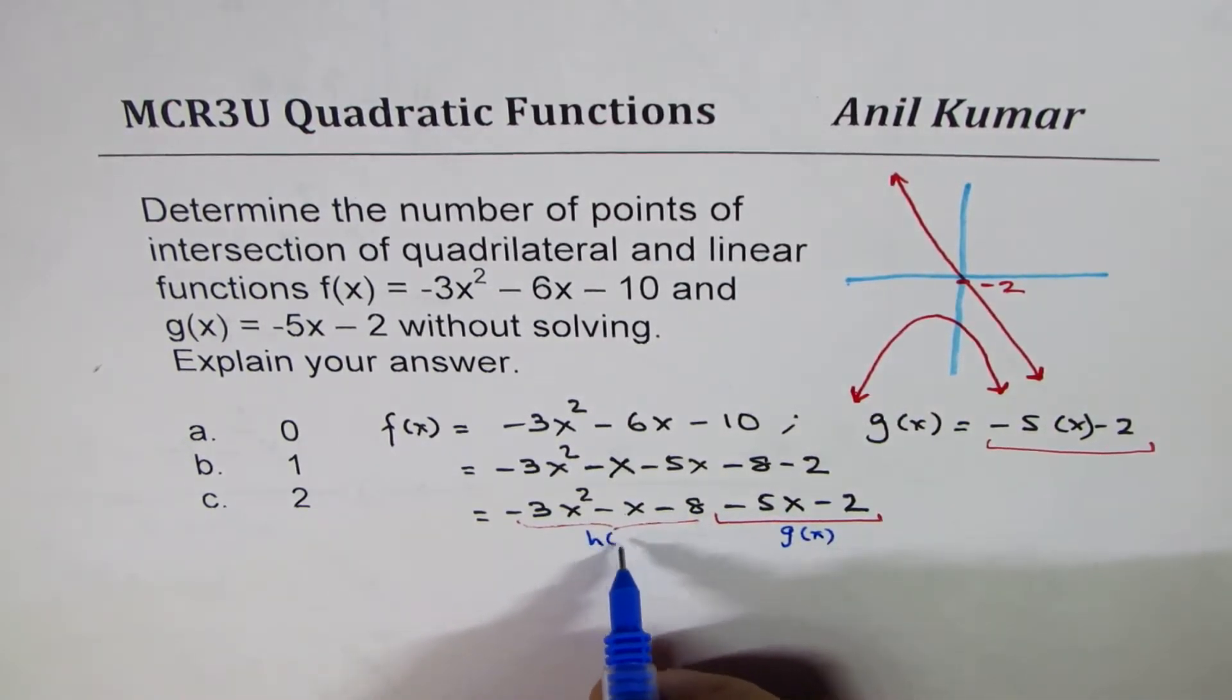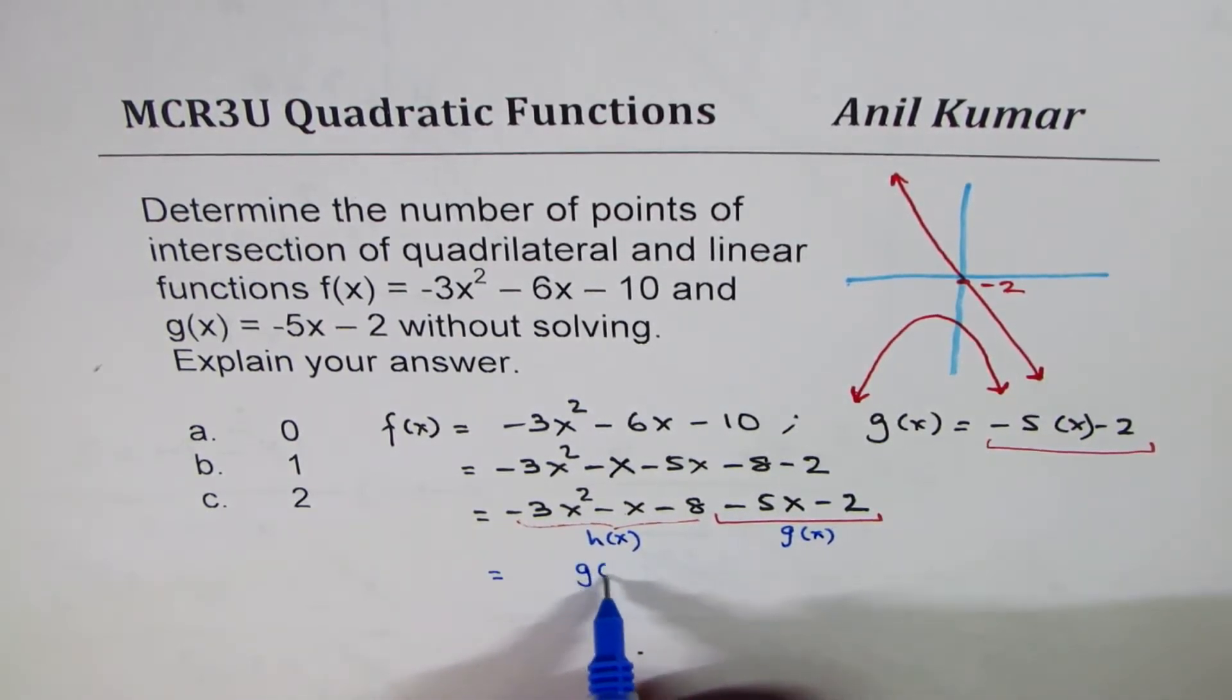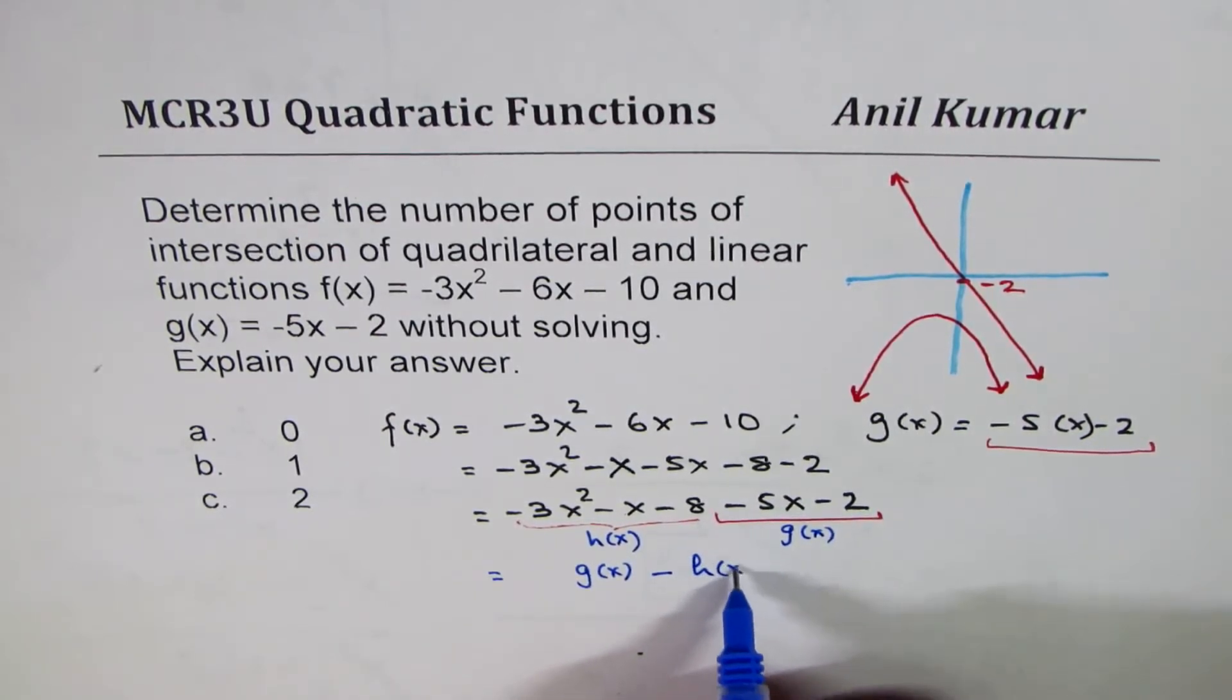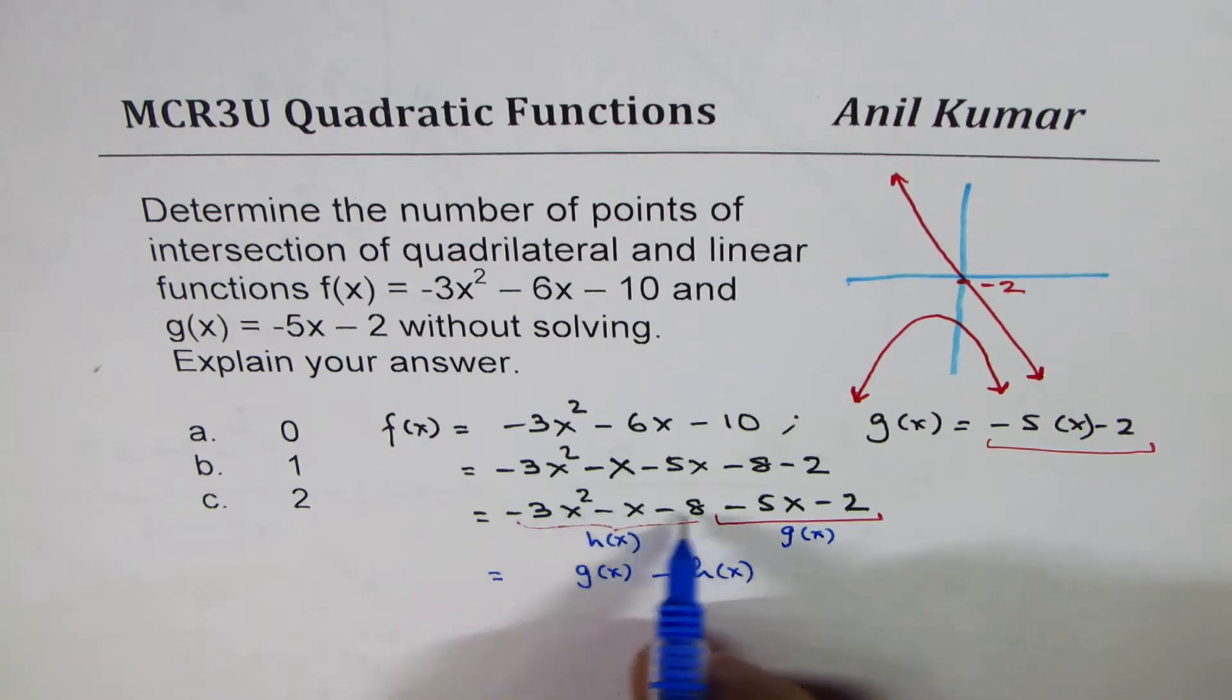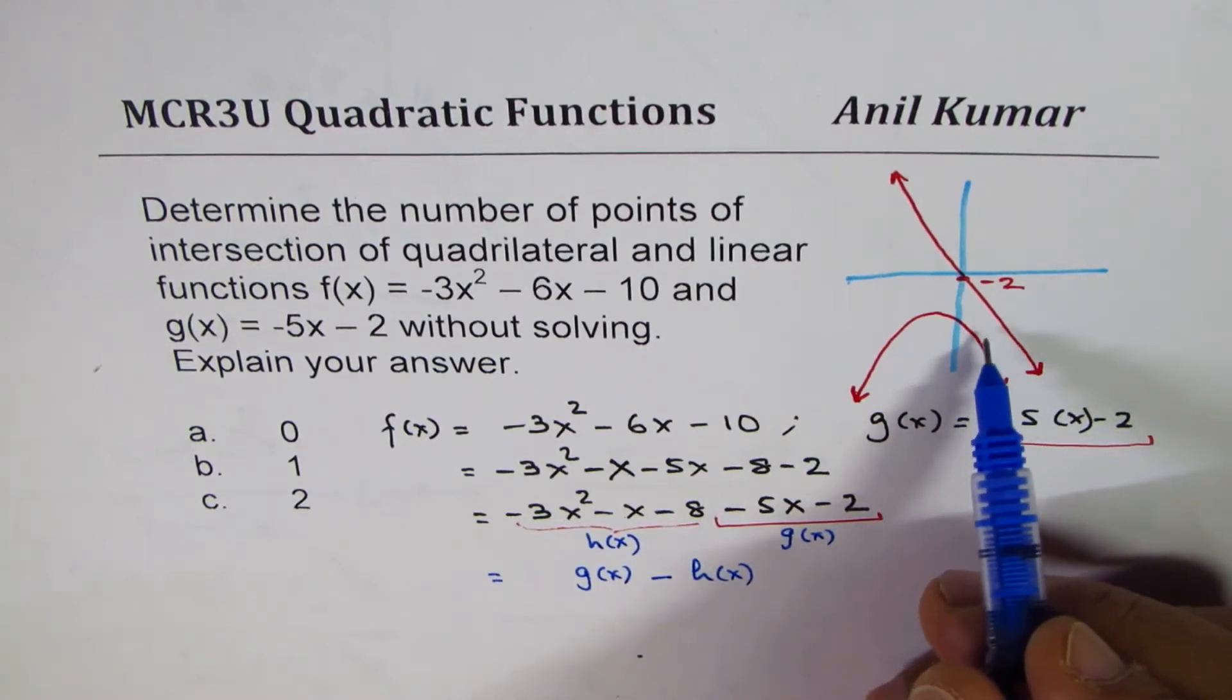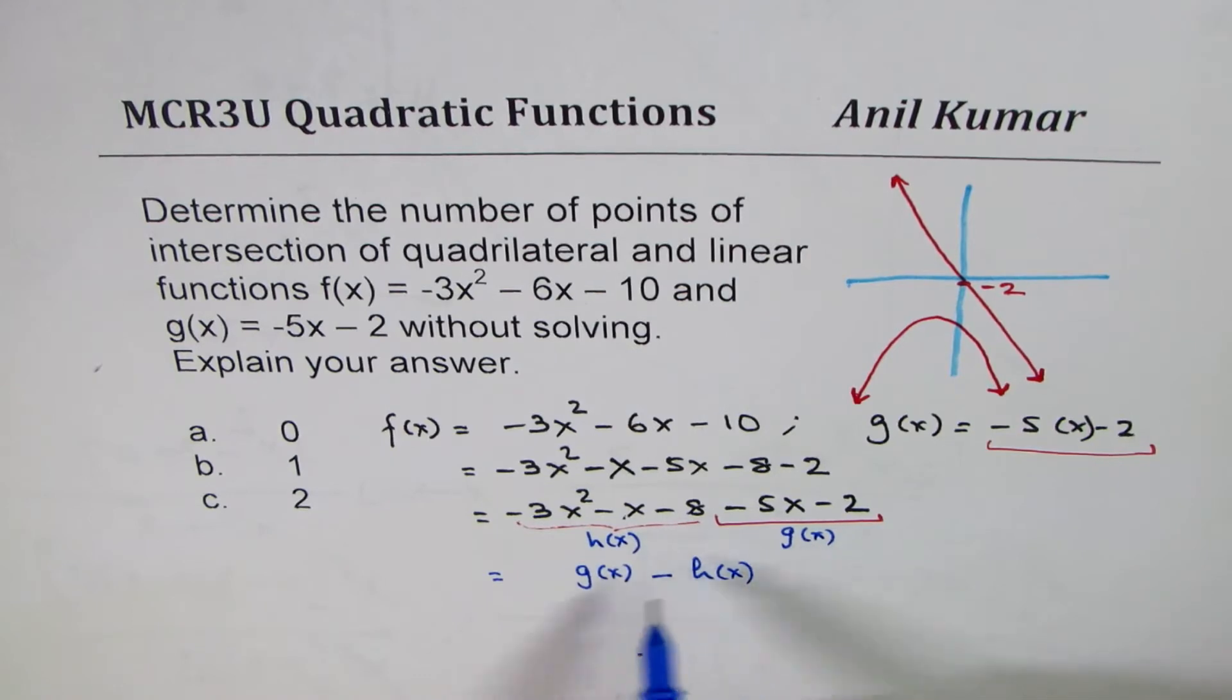And this is, let us say, h(x). So you could write this as f(x) = g(x) - h(x). This is always negative, right? So what we really find is that they will never intersect.